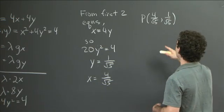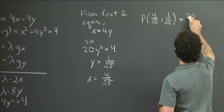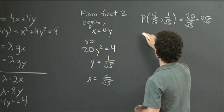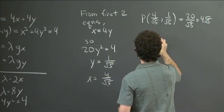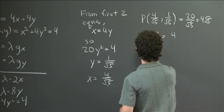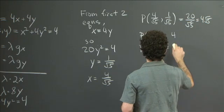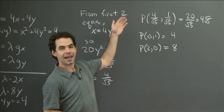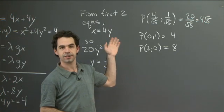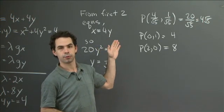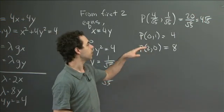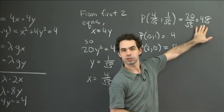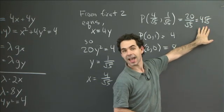We need to compute the objective function at our Lagrange point and at the boundary endpoints. At the point (4/√5, 1/√5), p equals 4x plus 4y equals 20 over root 5, which we can also write as 4 times root 5. At the endpoint (0, 1), p equals 4. At the endpoint (2, 0), p equals 8. Comparing the numbers 4√5, 4, and 8: 4√5 is the largest, so this is indeed the maximum value.